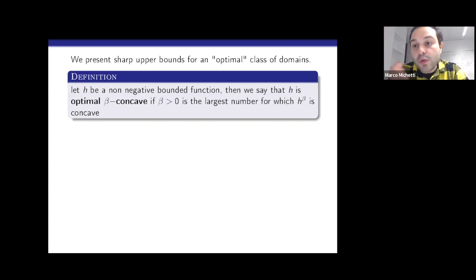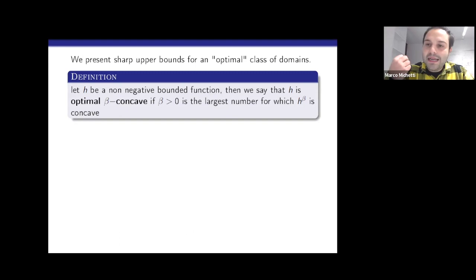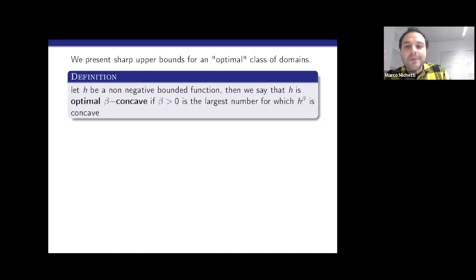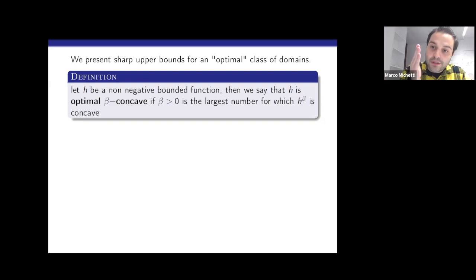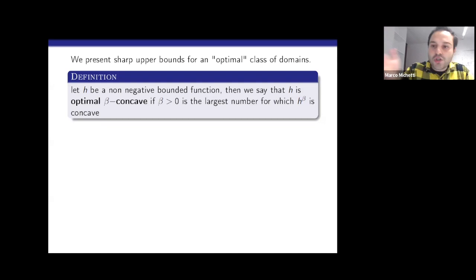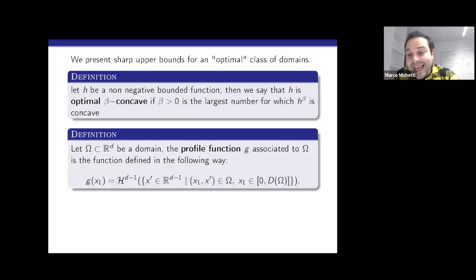What I want to present today is, in some sense, sharp upper bounds for domains in what I will call an optimal class of domains. I start by defining what an optimal beta-concave function is. If I take h to be a non-negative bounded function, then h is optimal beta-concave if beta is strictly positive and is the largest number for which h to the power beta is concave. A general beta-concave function has the property that if h is beta-concave then it is alpha-concave for every alpha smaller than beta, so I am taking the largest beta for which this property holds.